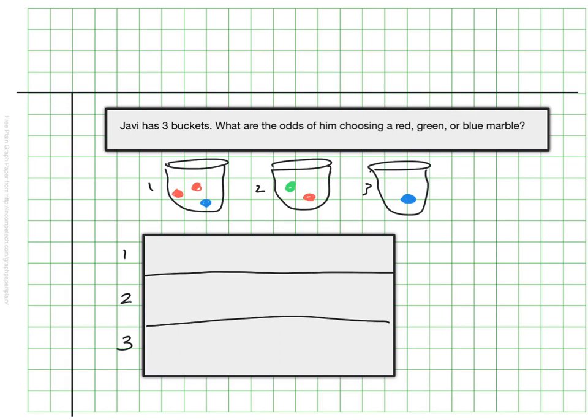In bucket one he has three choices. He could land on red, red, or blue. In bucket two he just has two choices. He could land in green or red. And in his last bucket the only option he has is a blue marble.